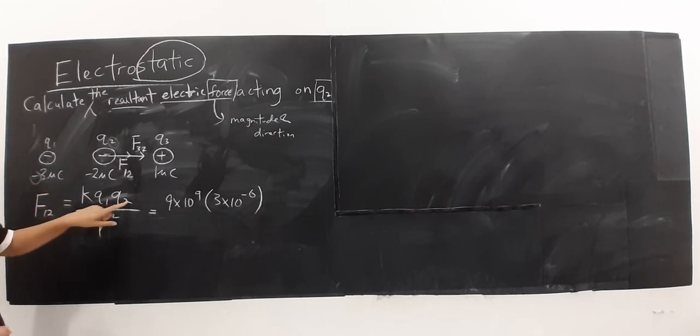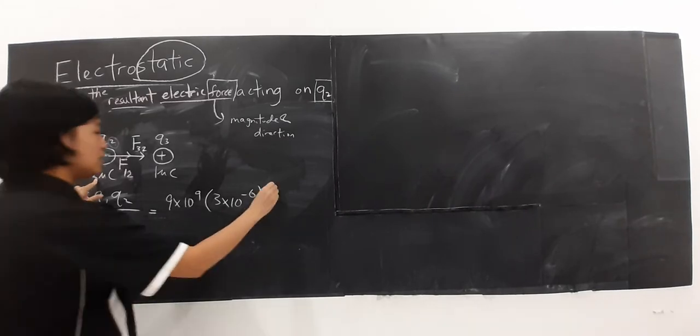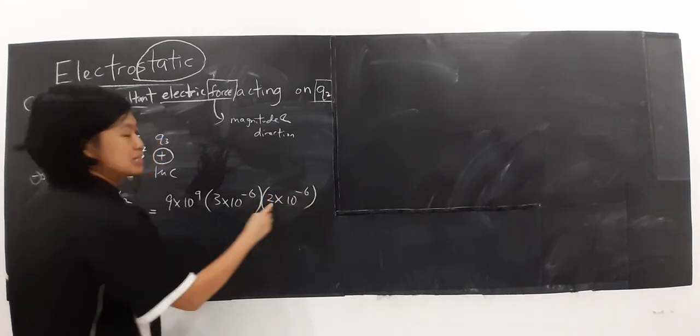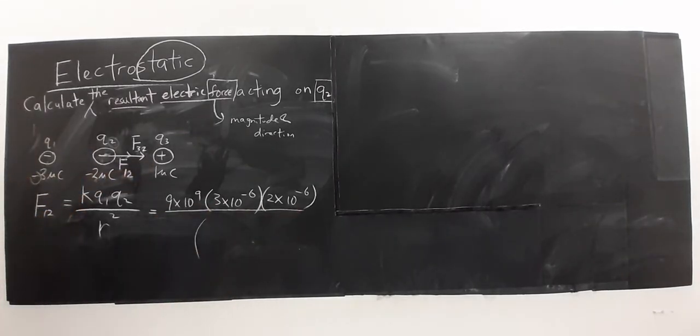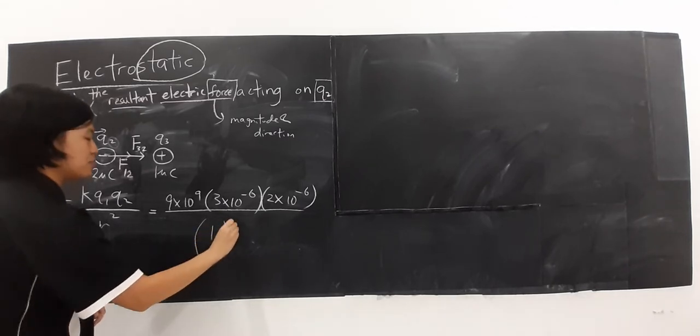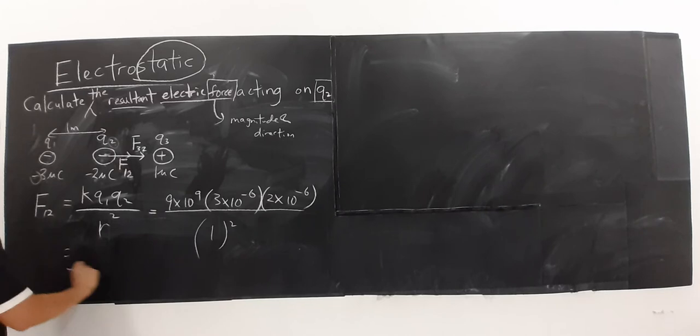And what else? Q2, nilai charge dia berapa? 2, never substitute the negative sign as well. And distance, for example, distance given here, 1 meter. So substitute with 1 here. Then you can find the value of F1,2.